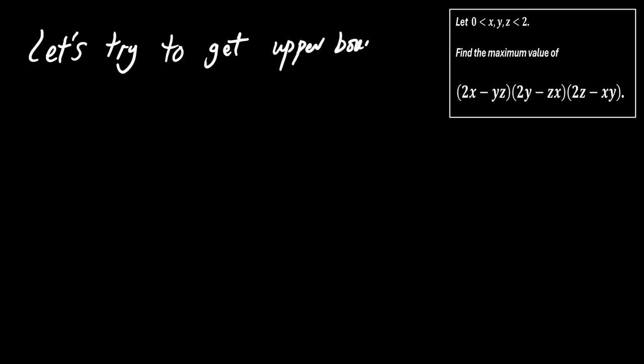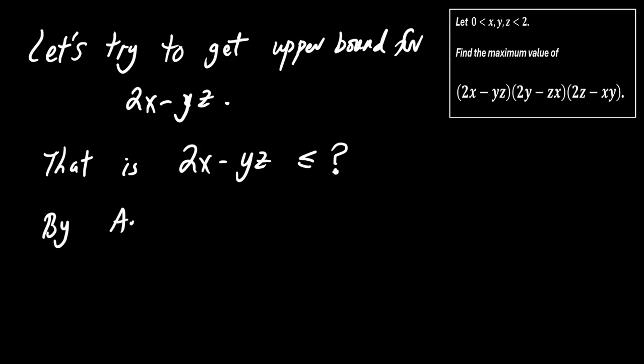Let's try to find an upper bound for 2x minus yz. Can we show that 2x minus yz is less than or equal to x squared divided by yz? Let's use the AM-GM inequality.